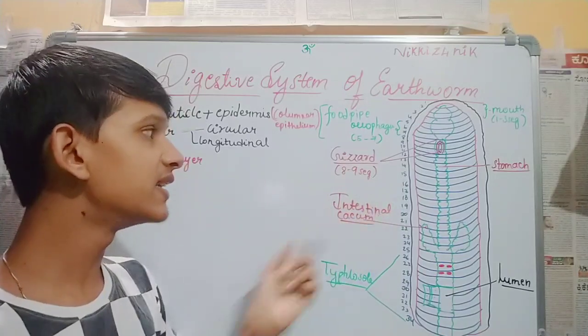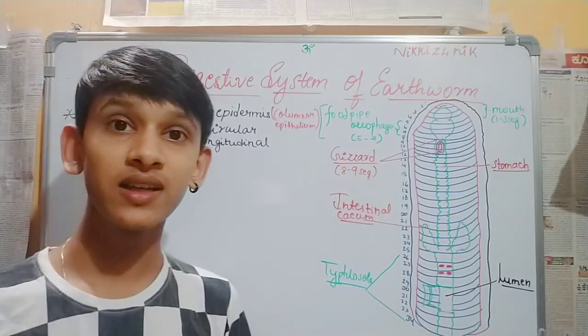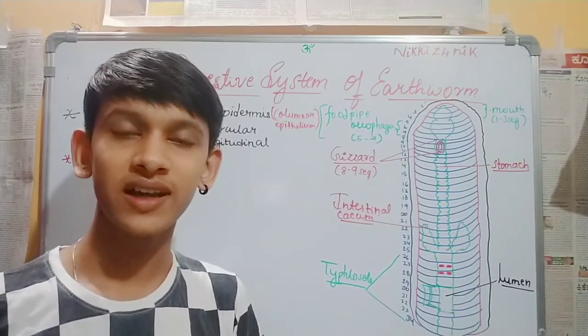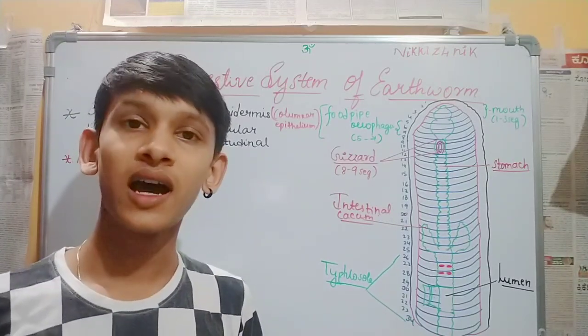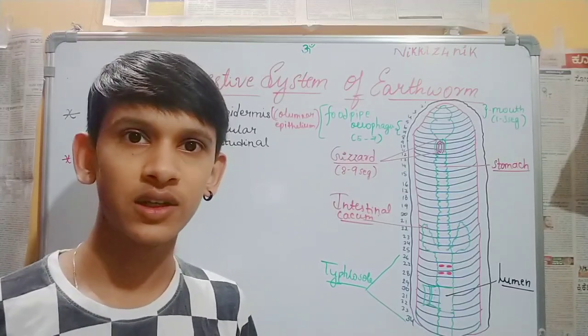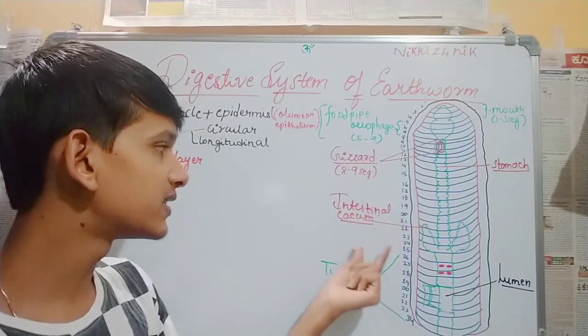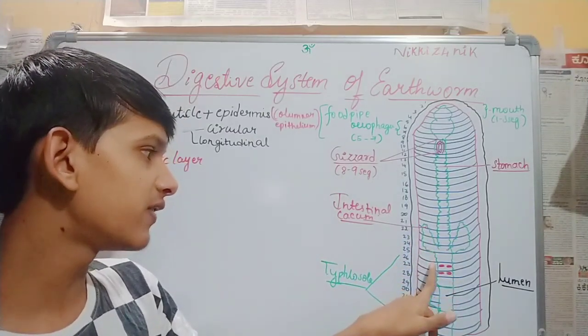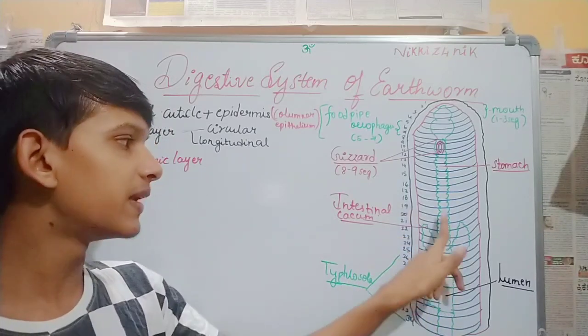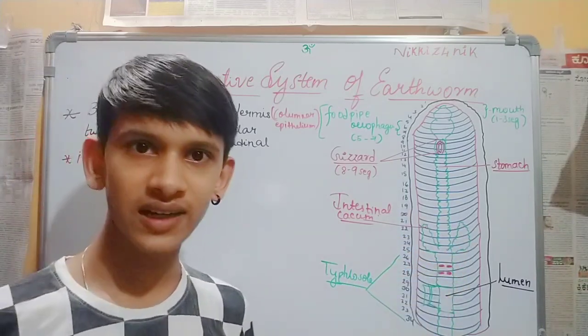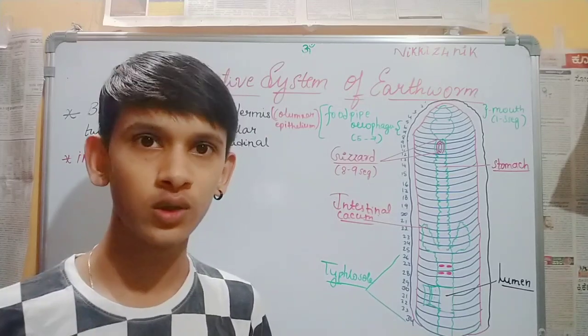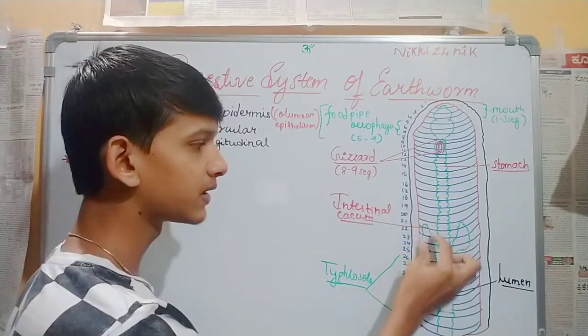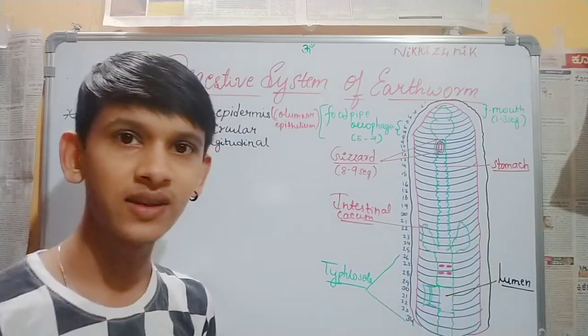Next is intestinal cecum. It is similar to the appendix in humans. This is at the 22nd segment, or 25th to 26th segment. Intestinal cecum is arrow-shaped.